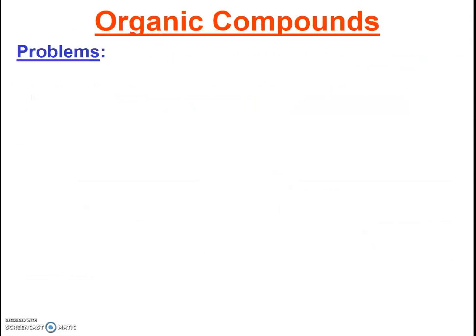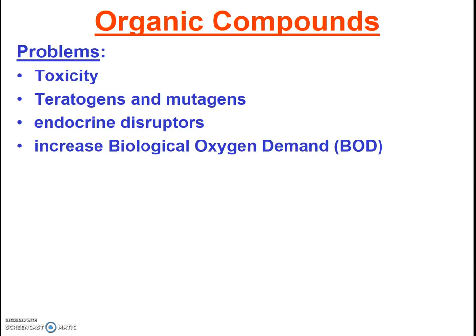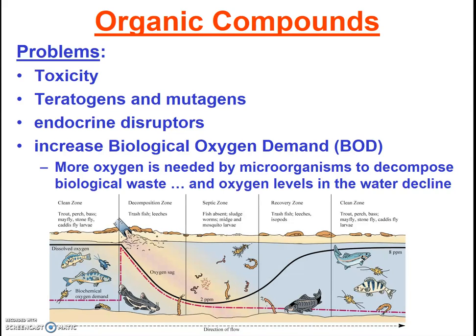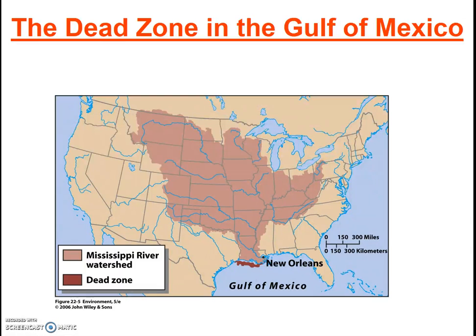The impacts of organic chemical pollutants can vary depending on the pollutant. Some are toxic; some may cause developmental problems or birth defects. You may want to review the effects of endocrine disruptors studied earlier in the course. Most organic chemicals will increase the biological oxygen demand. Essentially, there are bacteria that will partially or completely degrade the substance, and these decomposers require oxygen. As the decomposers work, oxygen levels decline, and thus, just as with eutrophication, dead zones may occur.